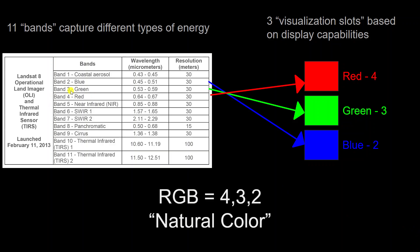At this point in the analysis, you have to be aware of which bands on the sensor correspond to red, green, and blue, which will make up a natural color image. In the case of Landsat 8, red is band 4, green is band 3, and blue is band 2. Together, these will make a natural color image when put into the visualization slots of ArcGIS Pro.